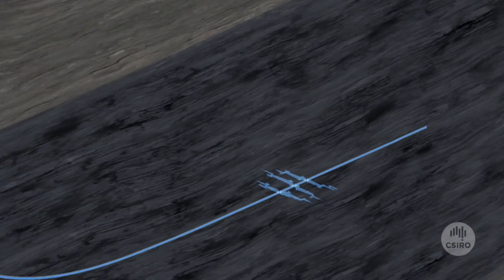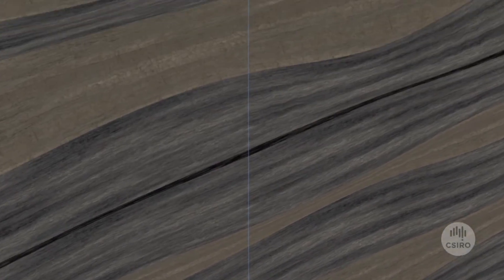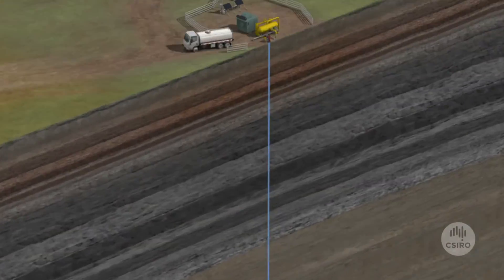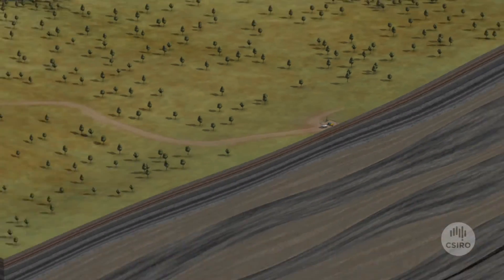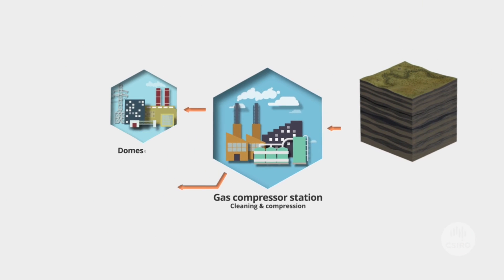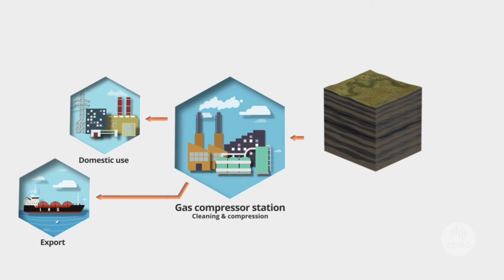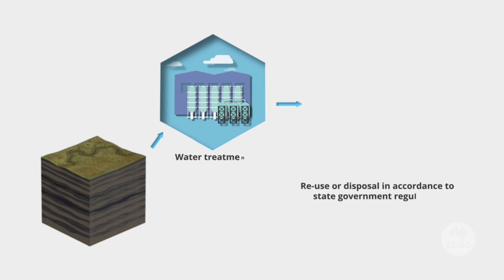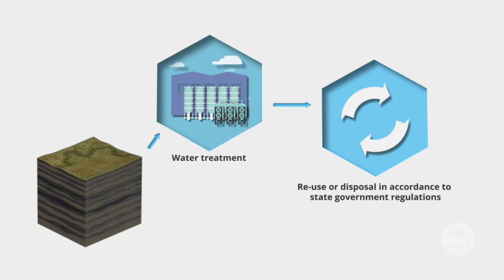Shale gas, and any produced water, flow to the well and are pumped to the surface and separated at the well head. Extracted gas is processed and transported for domestic and/or international use. The produced water is treated then either used in future hydraulic fracturing jobs or disposed of in accordance with state government regulations.